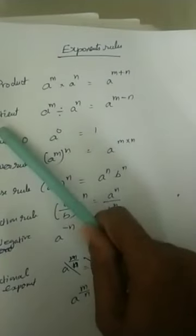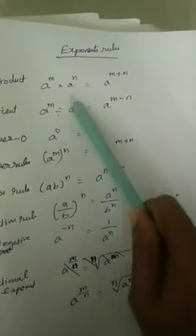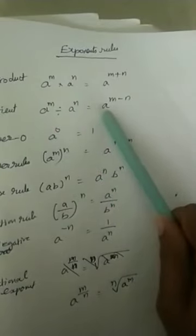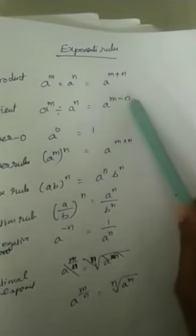Quotient rule, or division rule: a power m divided by a power n equals a power m minus n.